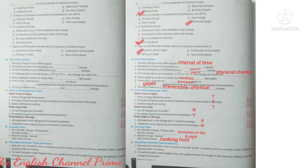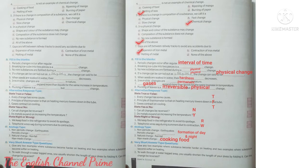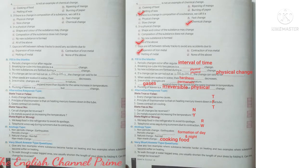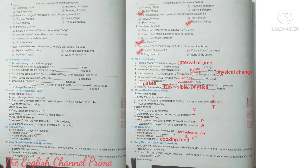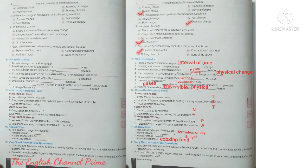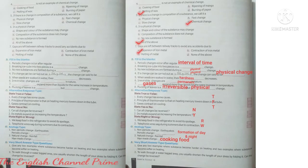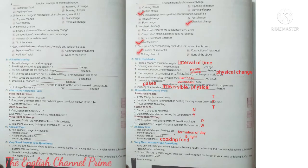Fourth question: Which is not an example of chemical change? Cooking of food, melting of wax, ripening of mango, or burning of paper? Yes children, melting of wax is not an example of chemical change because it doesn't change into a different element or substance.